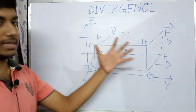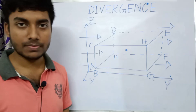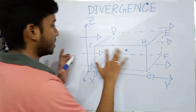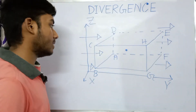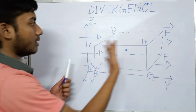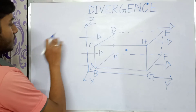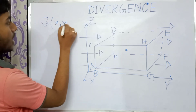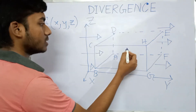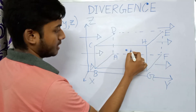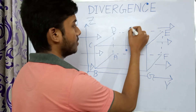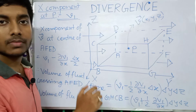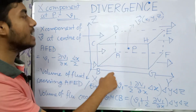Imagine a fluid is moving in 3D. We are considering a cube, or a rectangular shape — that is a parallelepiped. The fluid is moving such that the velocity of the fluid particles is a function of the coordinates x, y, z. Suppose this is the center of the parallelepiped, point P. Here the velocity v is a function of x, y, z. Suppose the x-component of velocity v at point P is v1.